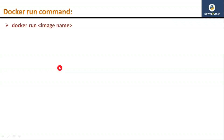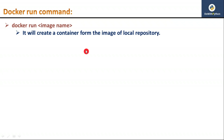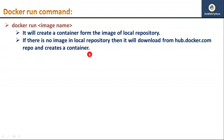We already saw in the previous video that the basic command 'docker run image_name' will create a container. If that image is in the local repository, it will create the container from there. If it is not in the local repository, it will connect to the remote repository at hub.docker.com, download it, and then create the container.